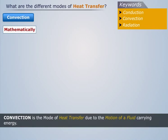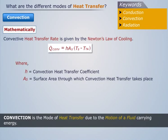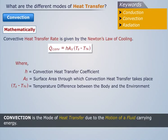Mathematically, the convective heat transfer rate is given by Newton's law of cooling, and it is represented as Q = HAs(Ts - T∞), where H is the convection heat transfer coefficient, As is the surface area through which convection heat transfer takes place, and Ts minus T infinity is the temperature difference between the body and the environment.